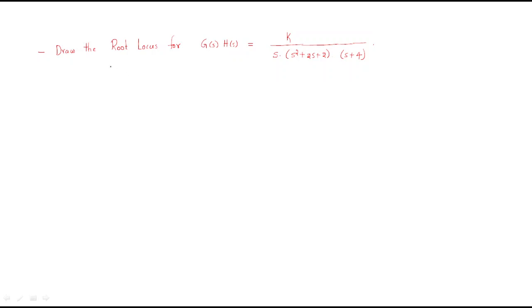Hello everyone. In this session we will discuss another root locus problem. The open loop transfer function is k divided by s times (s squared plus 2s plus 2) times (s plus 4). This is a fourth order system because of s power 1, s squared — so the number of poles P equals 4.